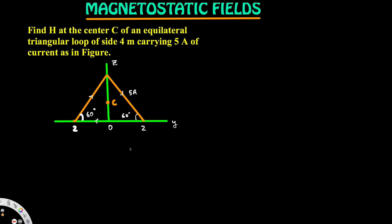Let's look at this problem. This question is asking to find H at the center C of an equilateral triangular loop of side 4 meters carrying 5 amperes of current as shown in the figure. The question is asking for H, which is the magnetic field intensity.